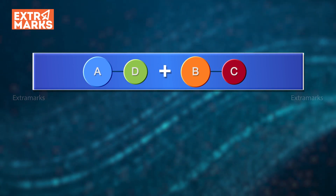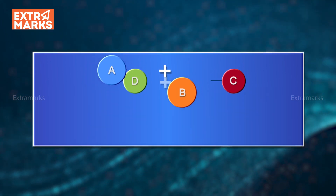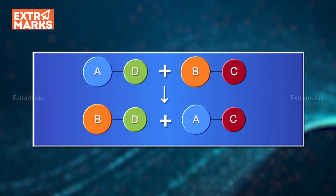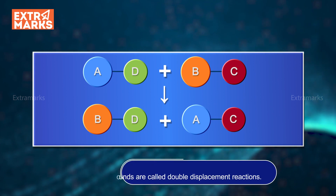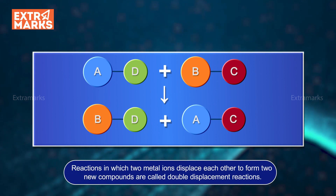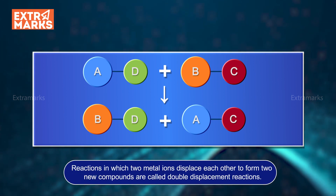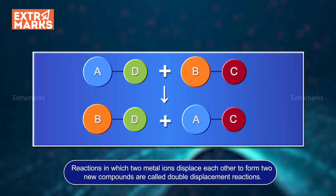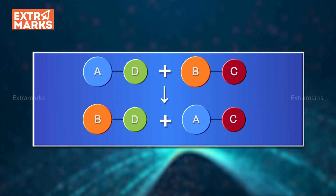Notice that in the given reactions, two metal ions are exchanging their positions. Such reactions in which two metal ions displace each other to form two new compounds are called double displacement reactions.